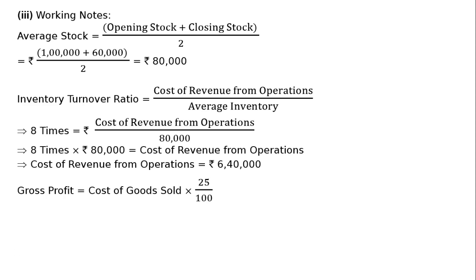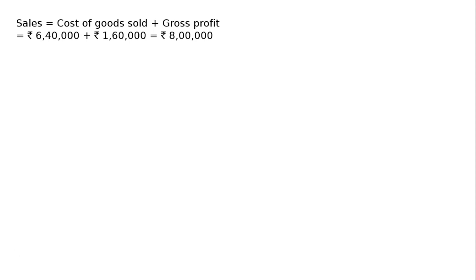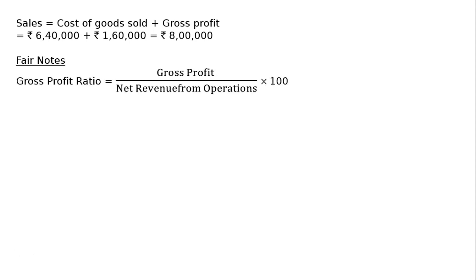Gross profit equals cost of goods sold multiplied by 25%. The cost of revenue from operations is Rs. 6,40,000, so gross profit equals Rs. 6,40,000 multiplied by 25%, which is Rs. 1,60,000. Sales equals cost of goods sold plus gross profit, that is Rs. 6,40,000 plus Rs. 1,60,000, which equals Rs. 8,00,000. Therefore, gross profit ratio equals Rs. 1,60,000 upon Rs. 8,00,000 into 100, which equals 20%.